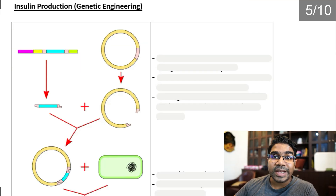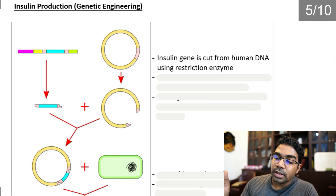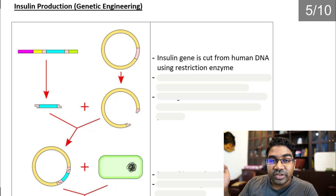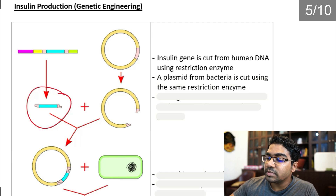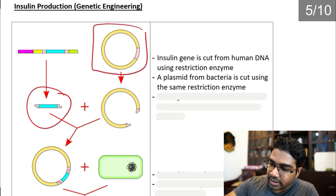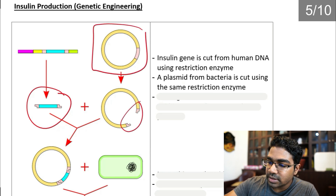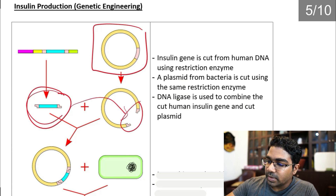Let's look at insulin production through genetic engineering. The first step is to get the insulin gene from human DNA by cutting it using a restriction enzyme. Then you cut a plasmid from bacteria using the same restriction enzyme, creating a space to fit the insulin gene in.